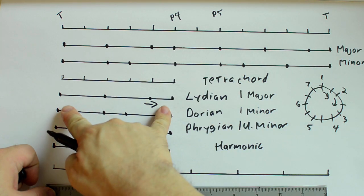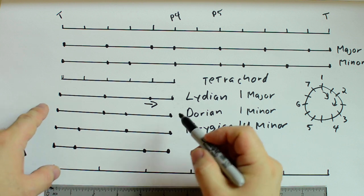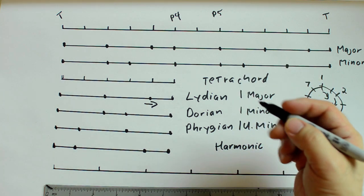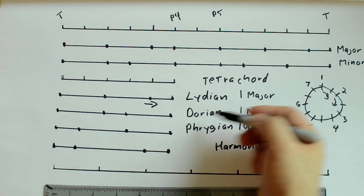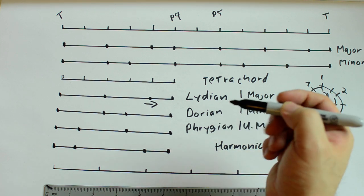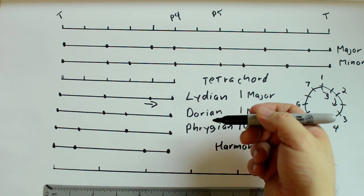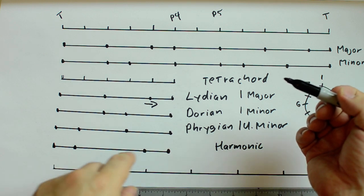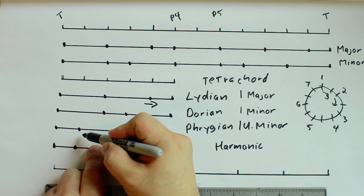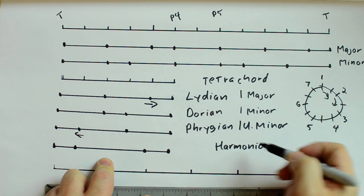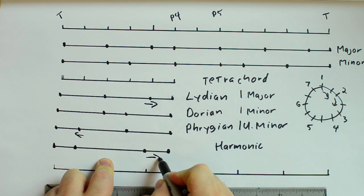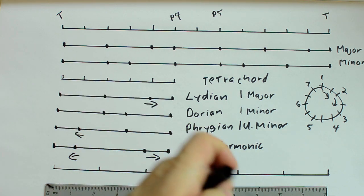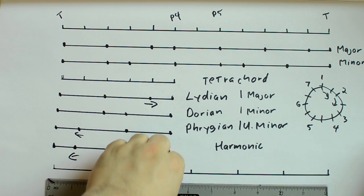It pushes music up towards whatever note is here — either the 4th or the tonic, depending on placement. The Dorian tetrachord doesn't really push music in either direction. It has this sort of floating feeling, and I think that's why a lot of musicians like it — you can sort of jam on the Dorian tetrachord for a long time without it ever wanting to resolve; it just floats around and never resolves into anything. The Phrygian tetrachord pushes music down. And the harmonic tetrachord, which is sort of an artificial tetrachord that doesn't follow the traditional rules, pushes music in both directions.